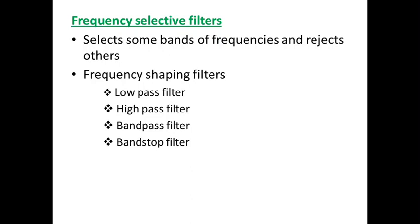These filters select some band of frequencies that are needed and reject others, and hence they are also called as frequency shaping filters. We know conventionally that there are four types of frequency shaping filters: low pass filter, high pass filter, band pass filter, and band stop filter.